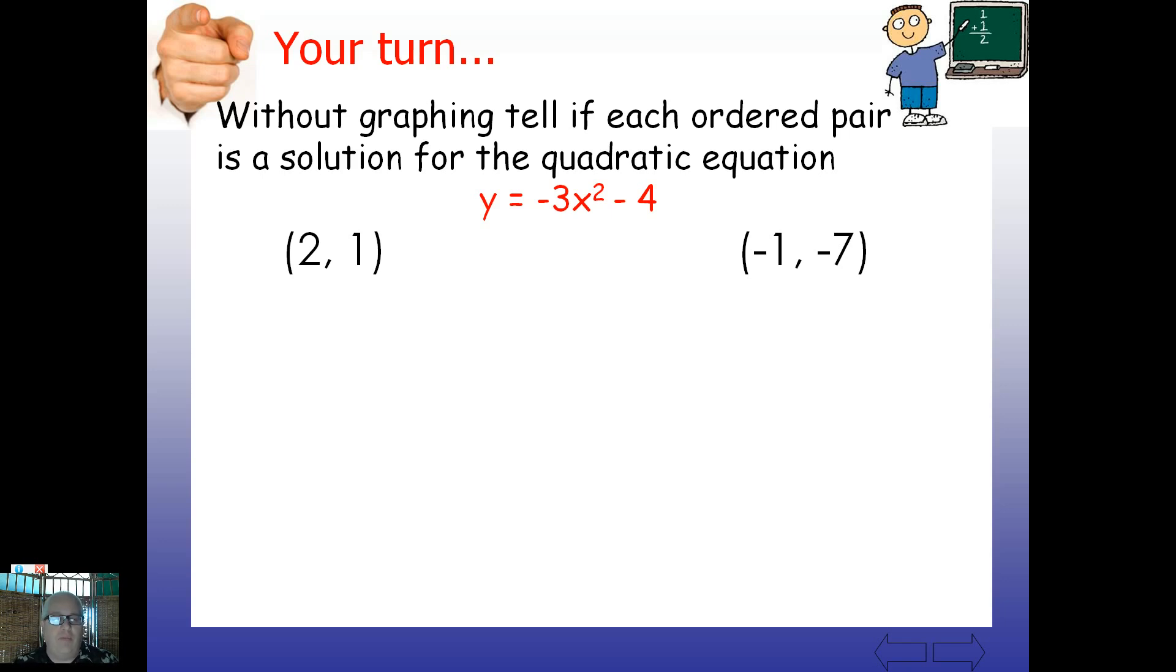All right then, how about we plug in that two for the x and the one for the y. So let's plug a two in here, right for the x. And I'm going to end up with all this here. Let's just see if the right side actually equals the left side. Negative three times two squared minus four. Remember, do the exponents first. So I'm going to end up with negative three times four minus four. Negative three minus four. Well, negative twelve subtract four is not going to be equal to one, so that's going to be a no.